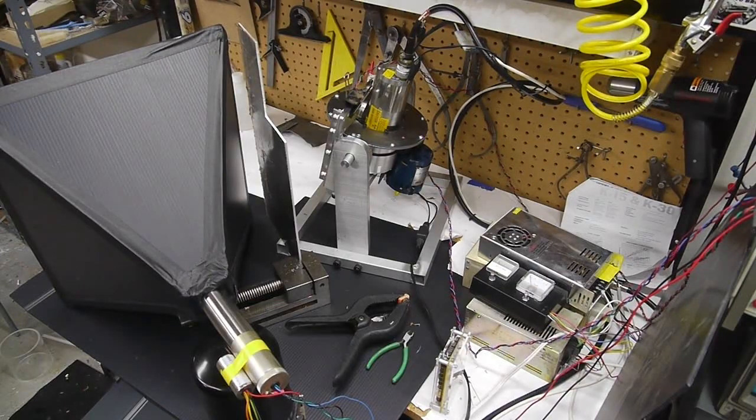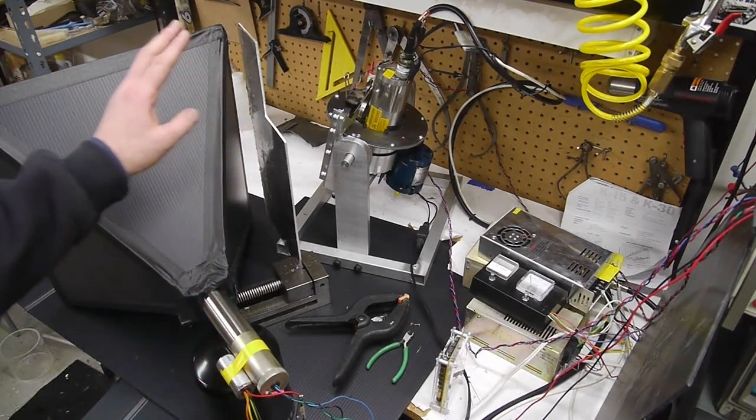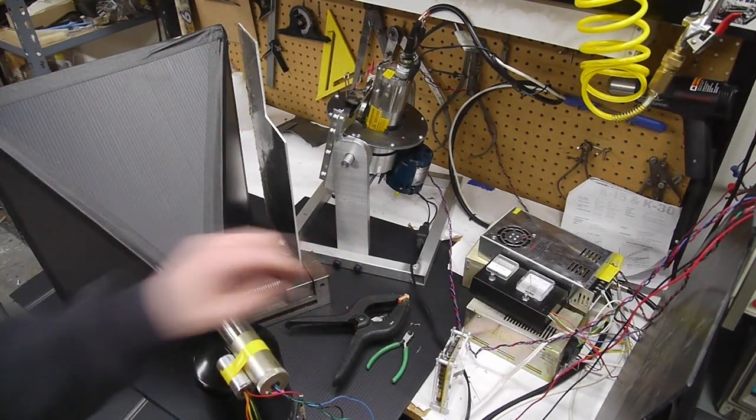As usual I ended up getting most of these parts on eBay. The photo multiplier, the X-ray tube, the power supplies for the X-ray.